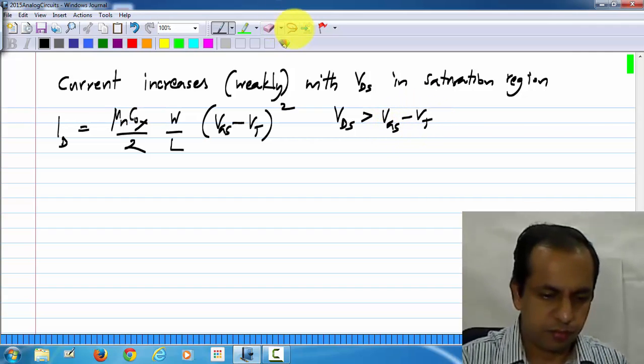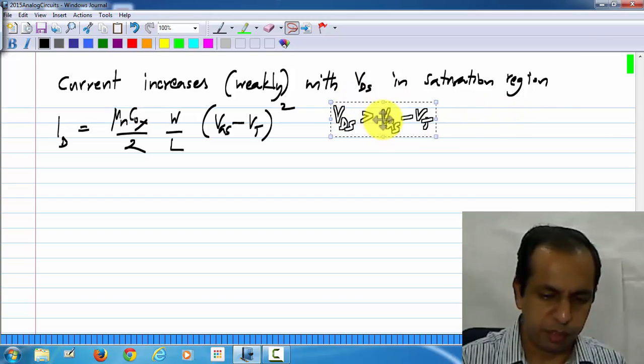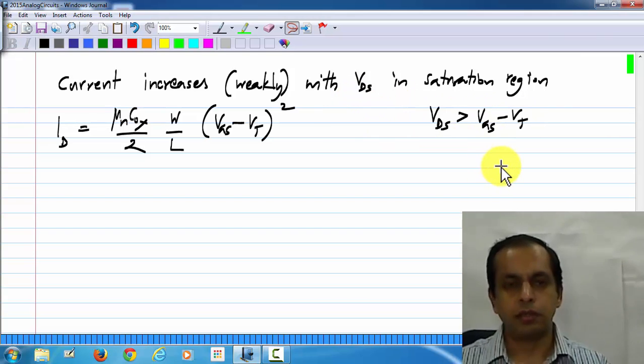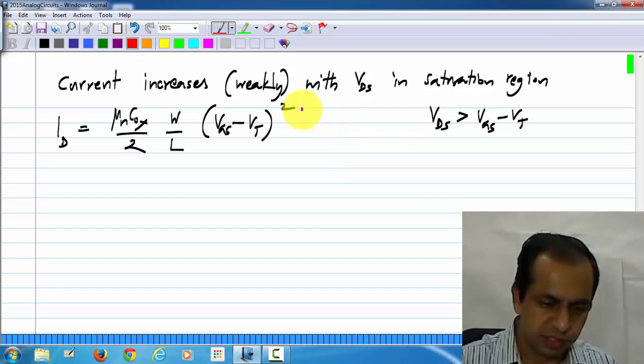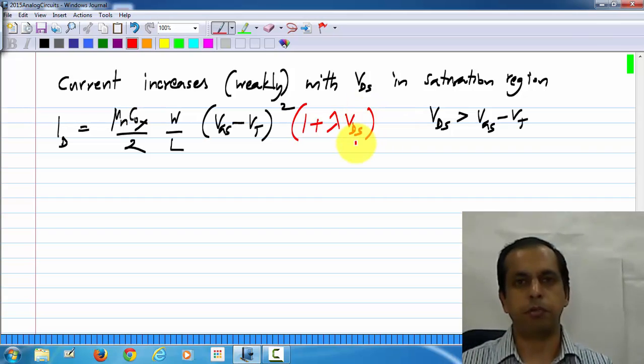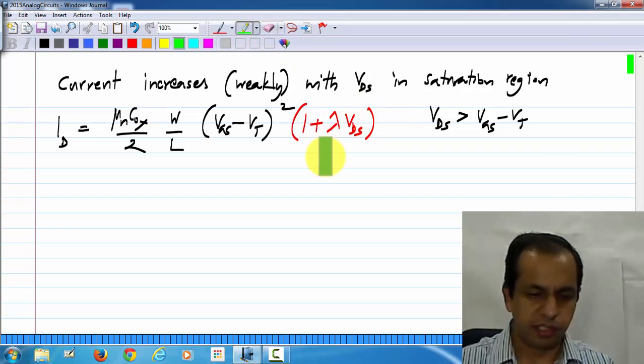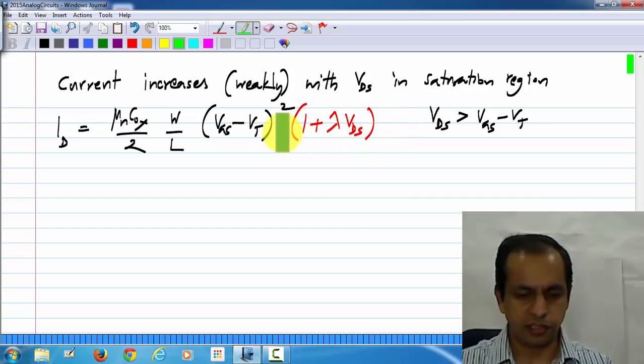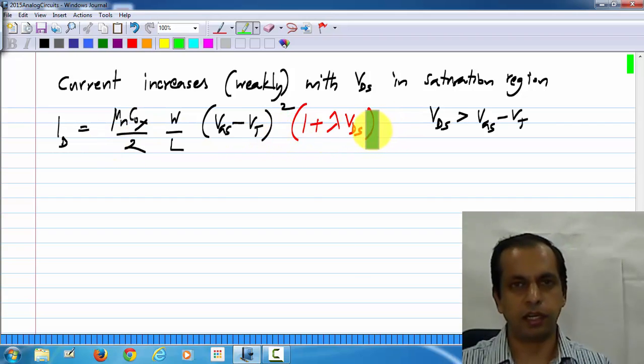Now, it turns out that there is a dependence on VDS, whereas this equation has no VDS at all. And that is introduced by an additional factor 1 plus lambda VDS. And you can see that as VDS increases, this entire thing, the current increases.